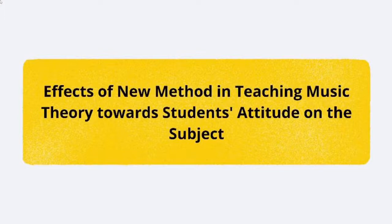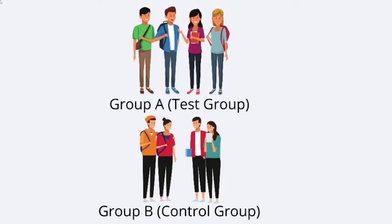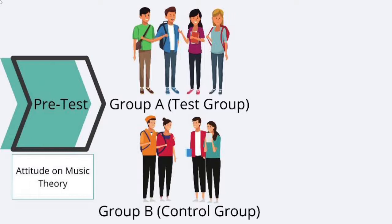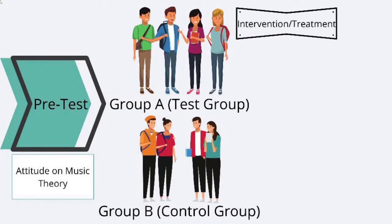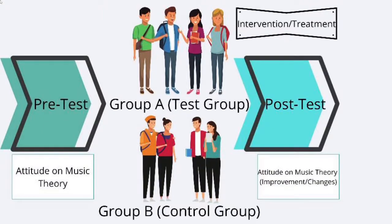Here's a study on the effects of a new method in teaching music theory towards students' attitude on the subject. Group A is the test group and Group B is the control group. Both groups will have a pre-test to determine their initial attitude on music theory. However, only Group A, the test group, will receive the intervention or treatment. After the intervention, both groups will have their post-test to determine if there is an improvement or changes in their attitude on music theory.